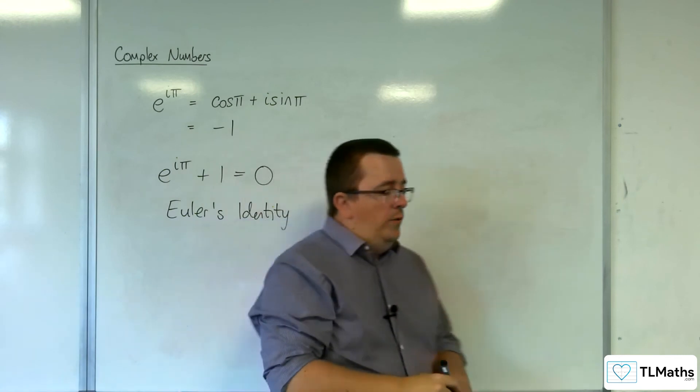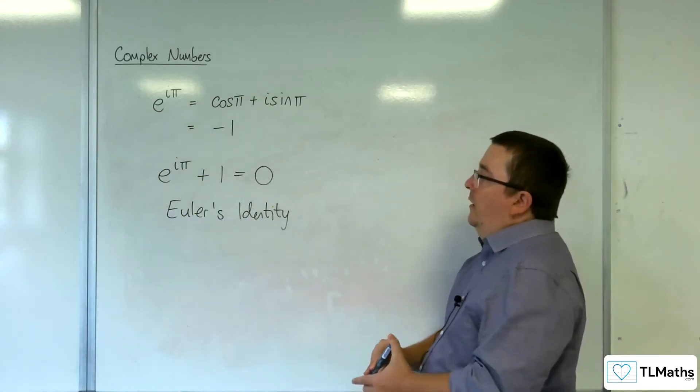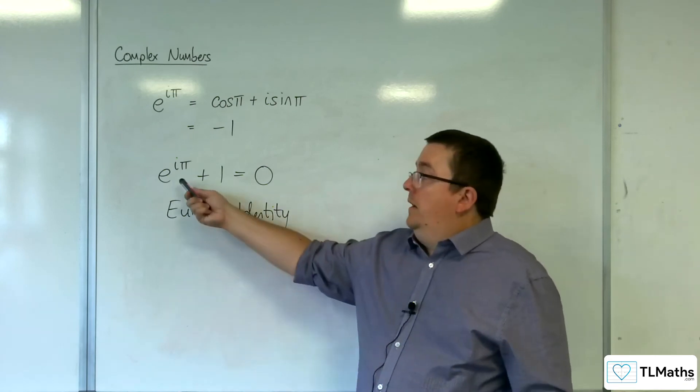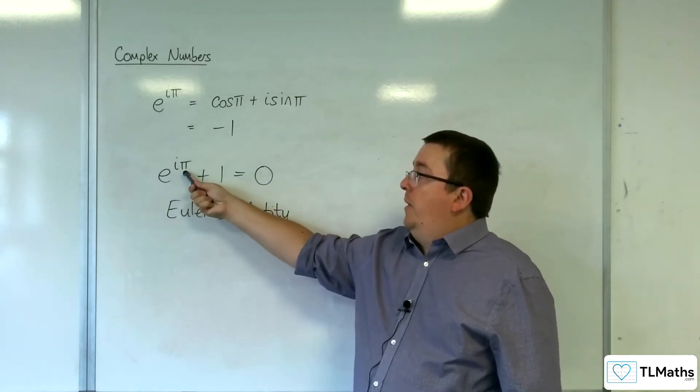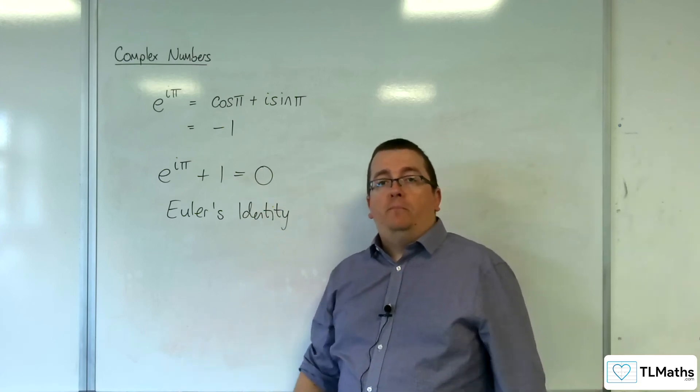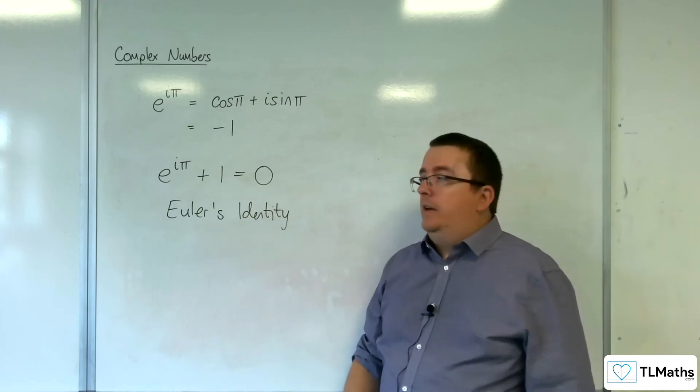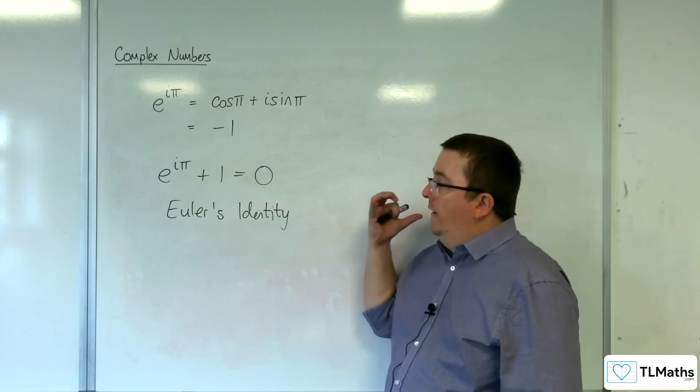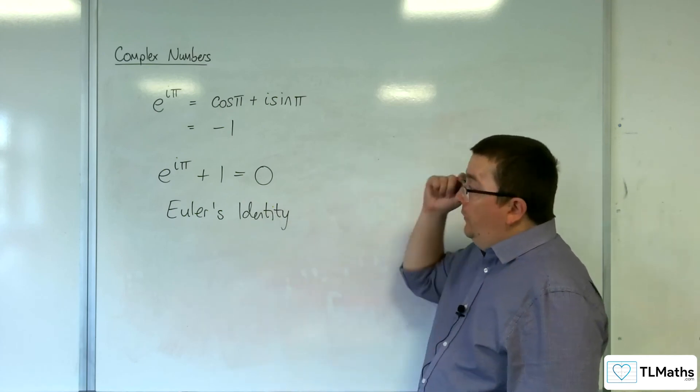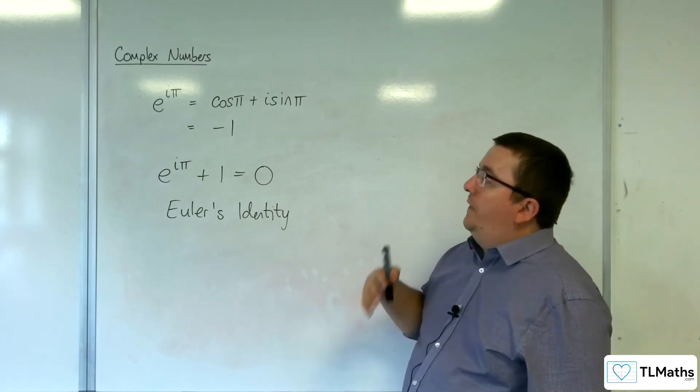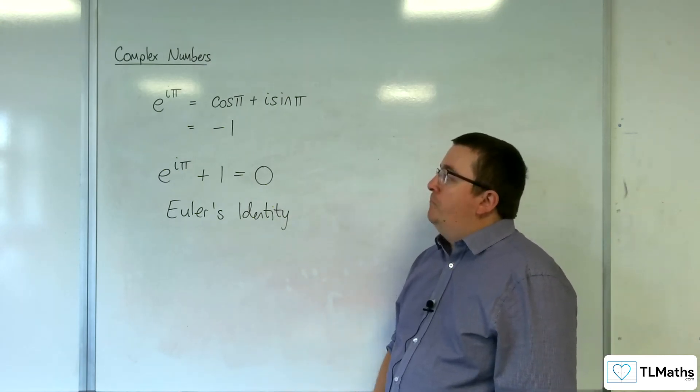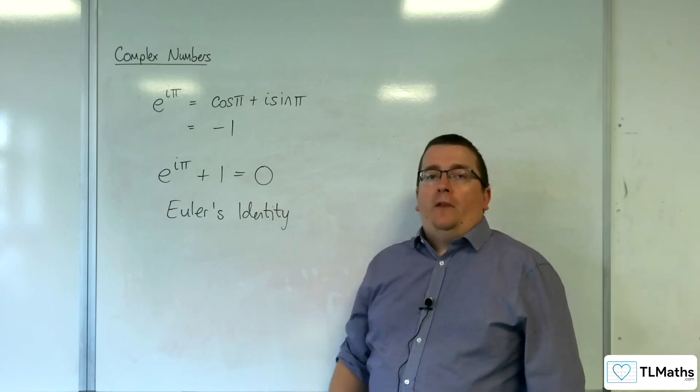Now, why would this be so special? Well, that is because it's combining e, i, π, 1 and 0, five of the most important numbers in mathematics, into a single, very short statement. So, in its brevity and the fact that it's just using each of those values once demonstrates its importance.